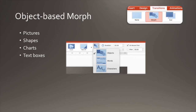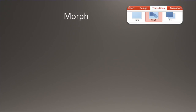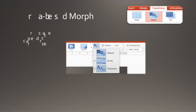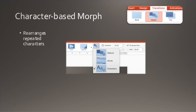The second type is word-based. Try this out when you have similar headings but wish to tie them together for emphasis. The character-based morph rearranges individual characters that have been repeated between the two slides, like an anagram effect.